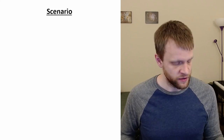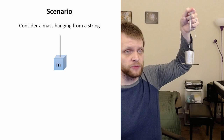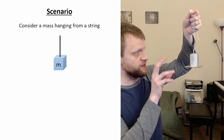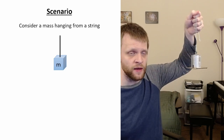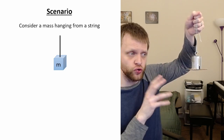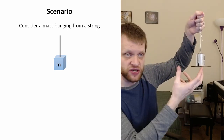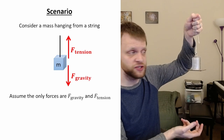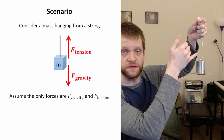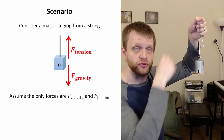Hi everyone. Consider the following system: an object just hanging from a string. We've got a mass attached to a string. There are only going to be two forces acting on this system — the force of gravity pulling down on the object, and the force of tension in the string pulling upwards on the object.